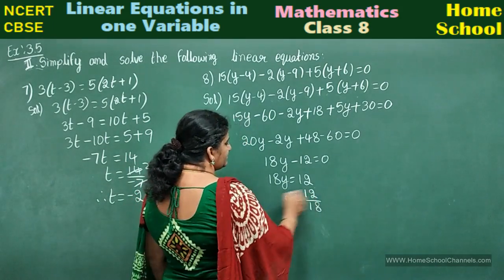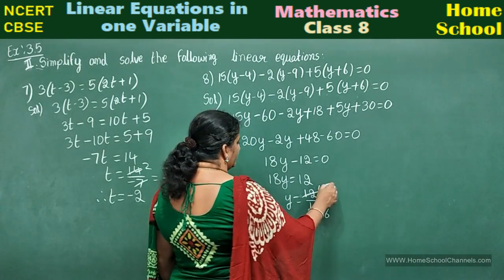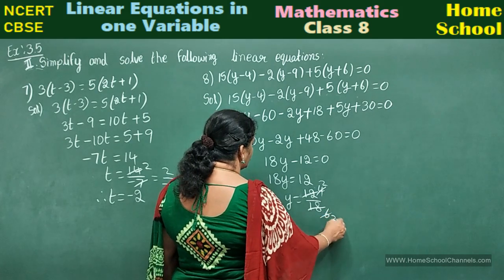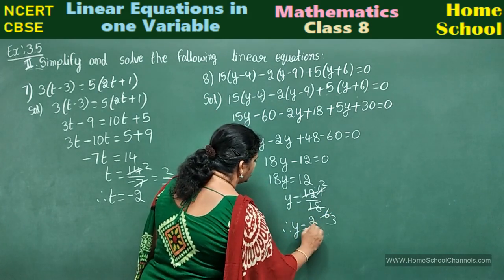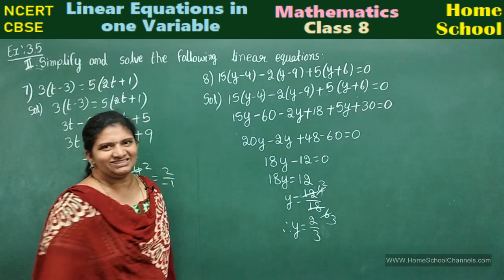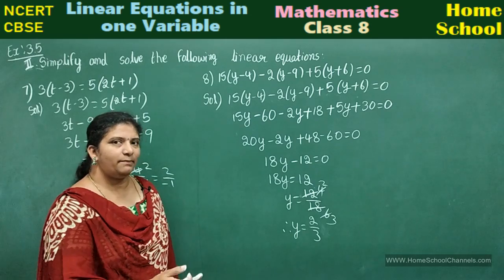18y equals 0 plus 12, which will be 12. y equals 12 by 18. Cancel here: 3 fours are 12, 3 sixes are 18, 2 twos are 4, 2 threes are 6. Therefore, y equals 2 by 3 is your answer.